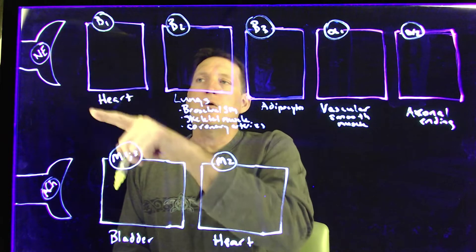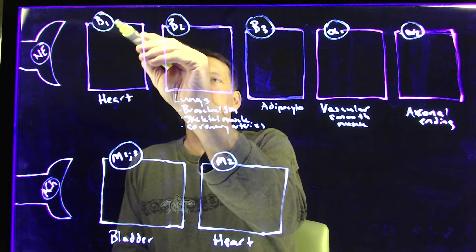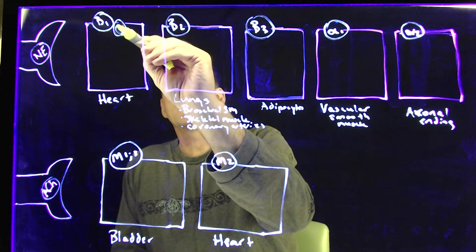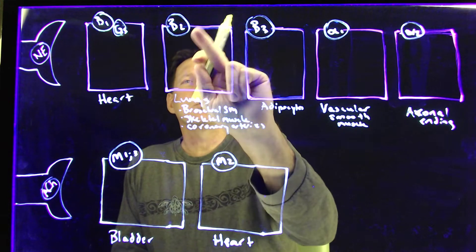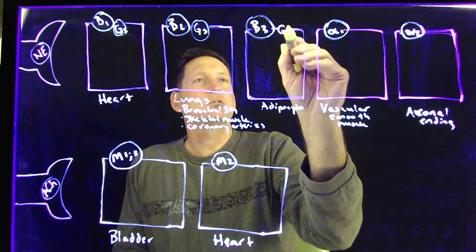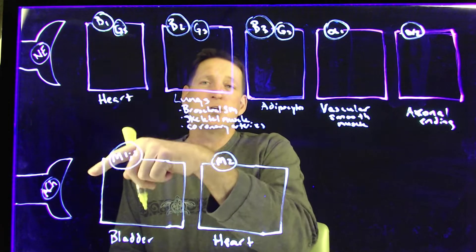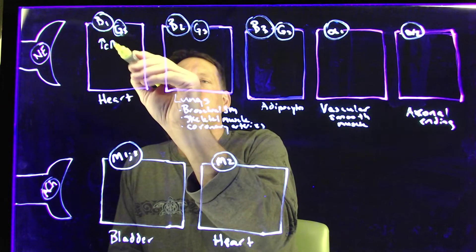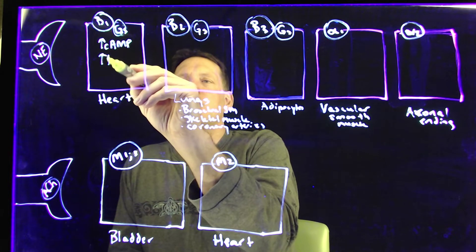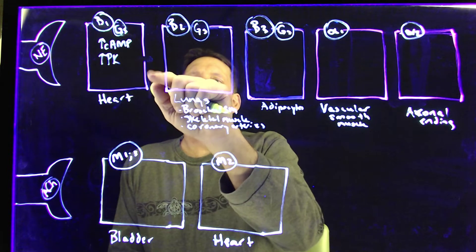Let's plug norepinephrine into a beta-1 receptor. When we do that, we activate a GS protein. All beta receptors — beta-1, beta-2, and beta-3 — are linked to GS proteins. Activation of a beta-1 receptor through its GS protein linkage will increase cyclic AMP by activating adenylyl cyclase. That increase in cyclic AMP increases protein kinase, and that increase in protein kinase increases the entry of calcium.